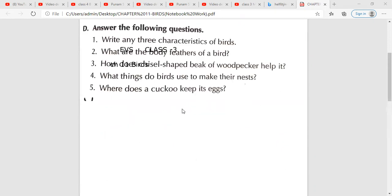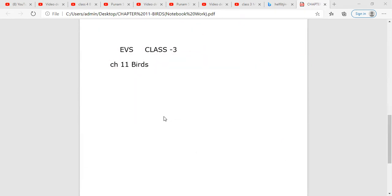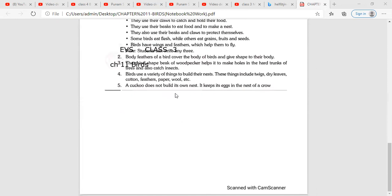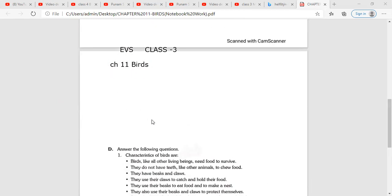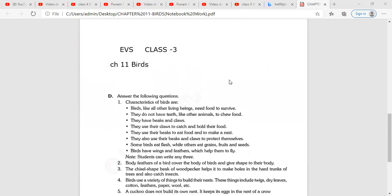Question number five. Where does a cuckoo keep its eggs? So, a cuckoo does not build its own nest. It keeps its eggs in the nest of a crow. So students, I hope all of you understood this. And you will complete this work today only in your EVS notebook.